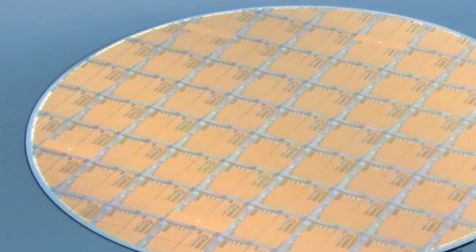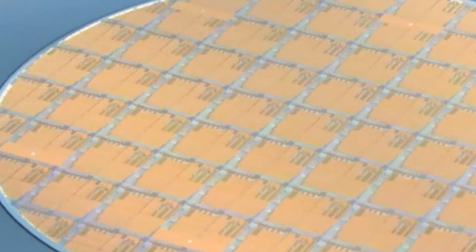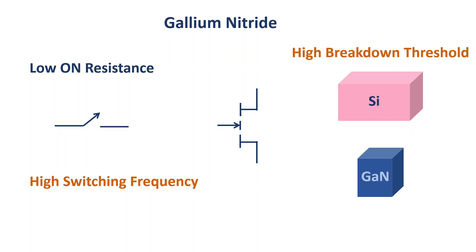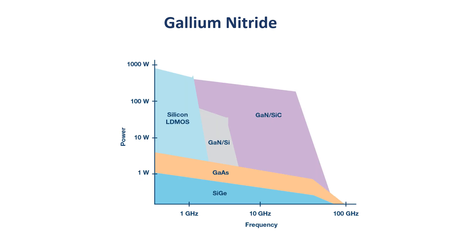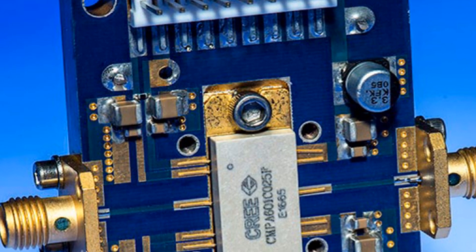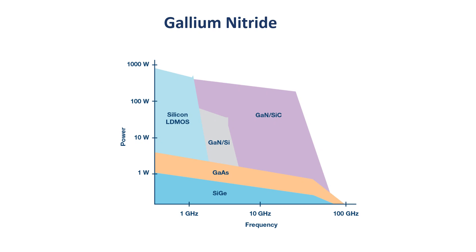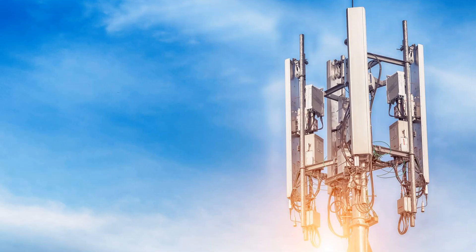Moreover, the high-frequency dielectric constant of gallium nitride is almost half that of silicon. This means gallium nitride based transistors have a lower gate capacitance and lower intrinsic capacitance, allowing them to work at high frequencies. That is why gallium nitride is used as an amplifier in many equipment operating at microwave and millimeter wave frequencies. Not only does it work at high frequencies, but it also operates more efficiently and consumes less power — which is why all 5G base stations will use gallium nitride based power amplifiers.